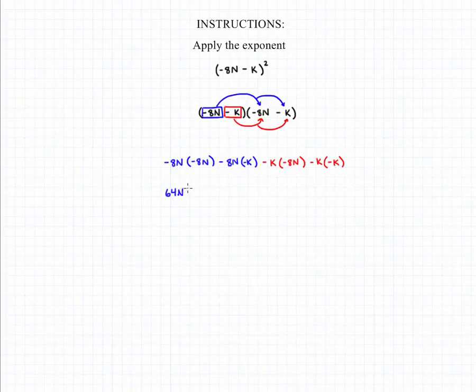If we clean this up a bit, we'll have 64n squared plus 8nk plus 8kn plus k squared.